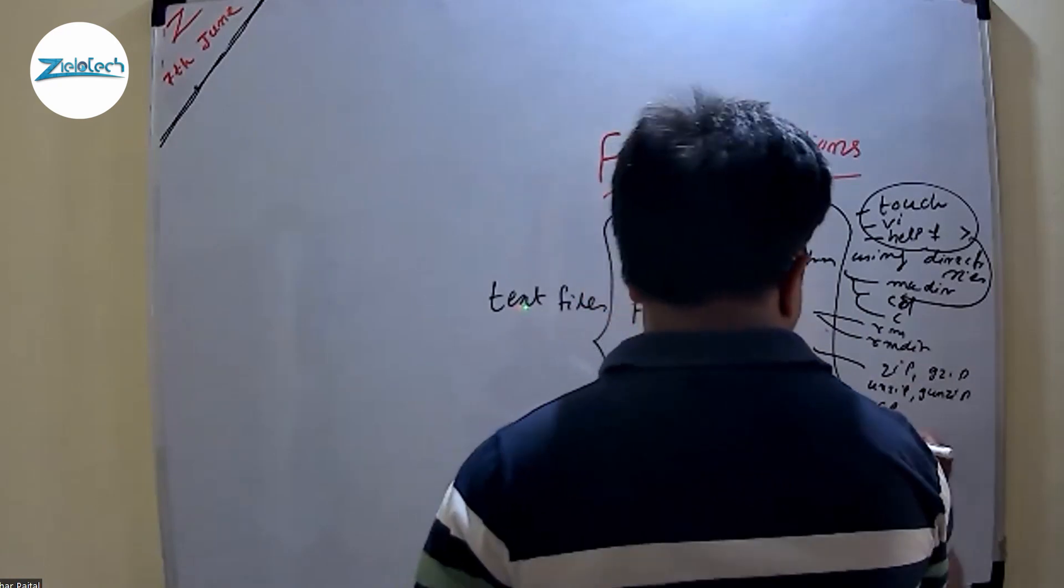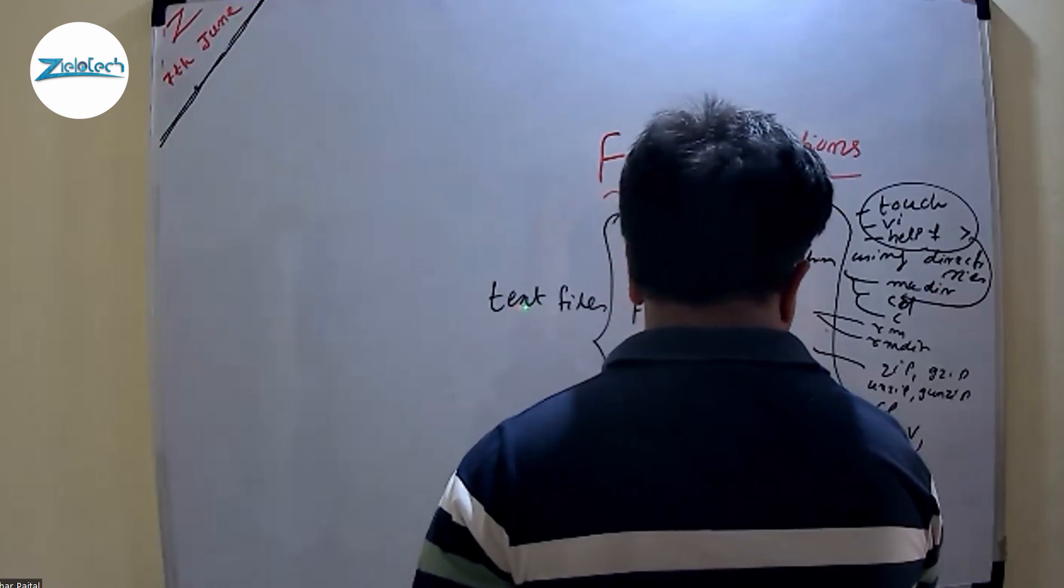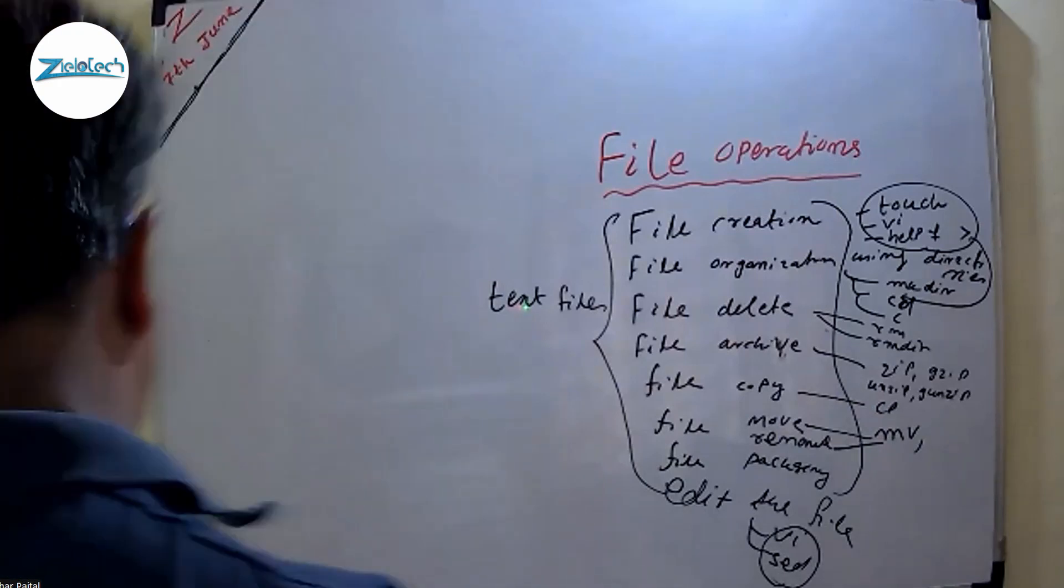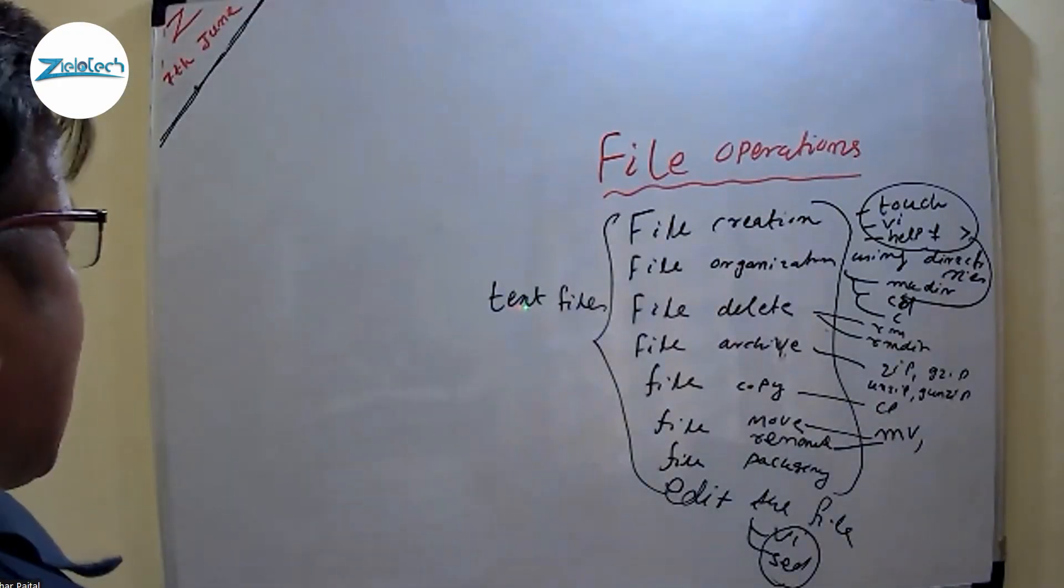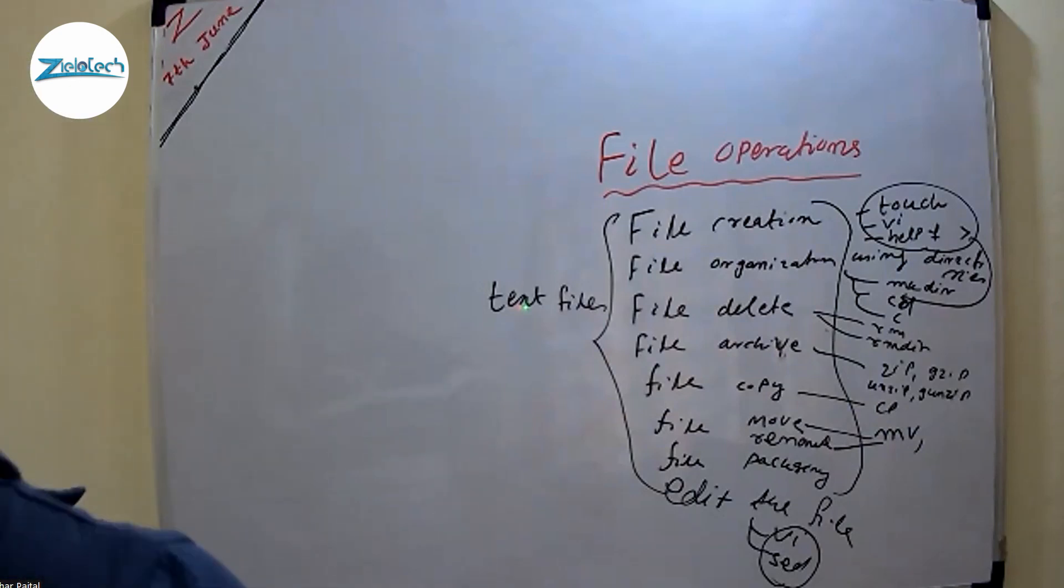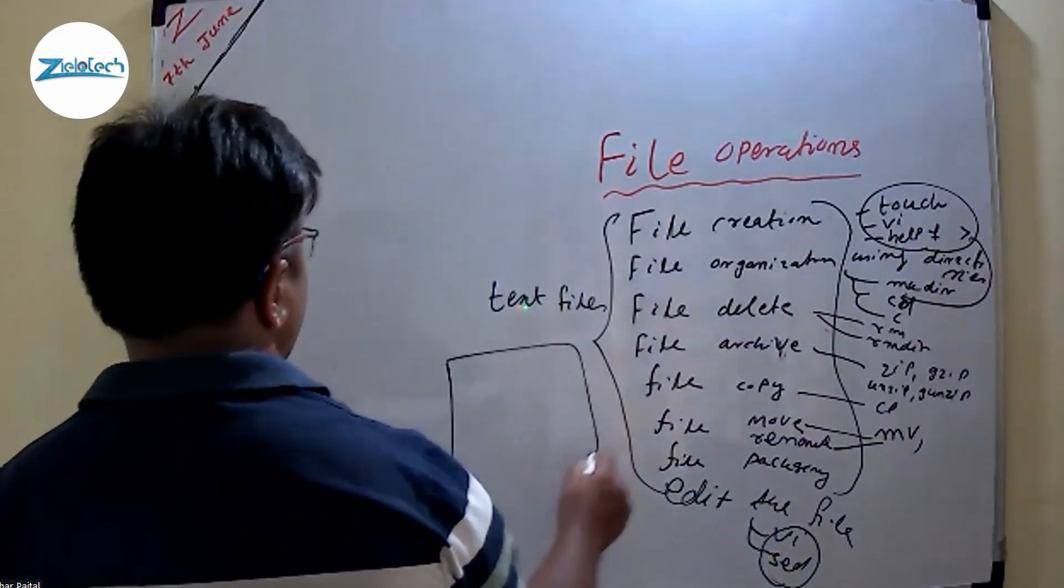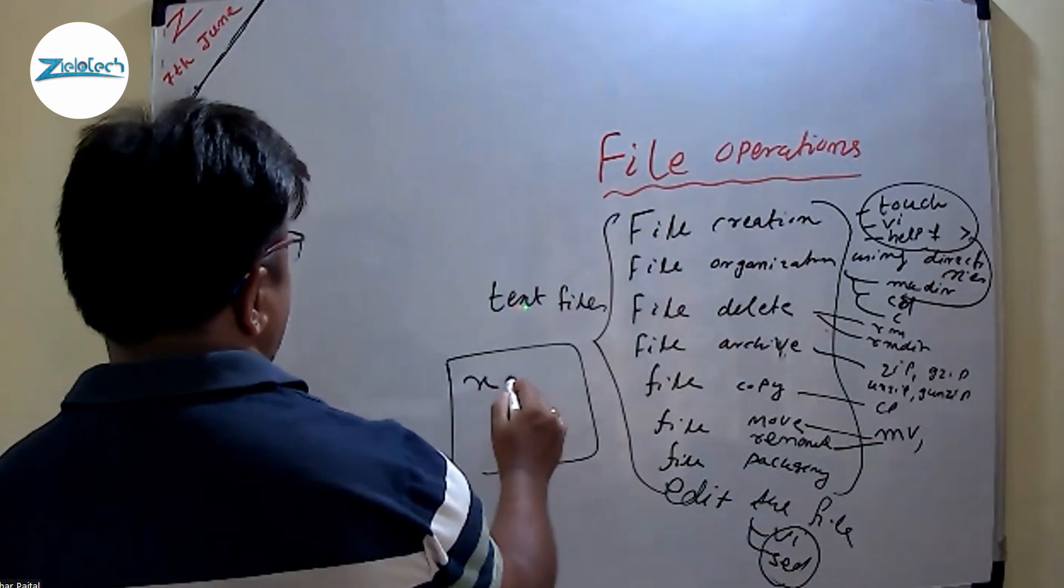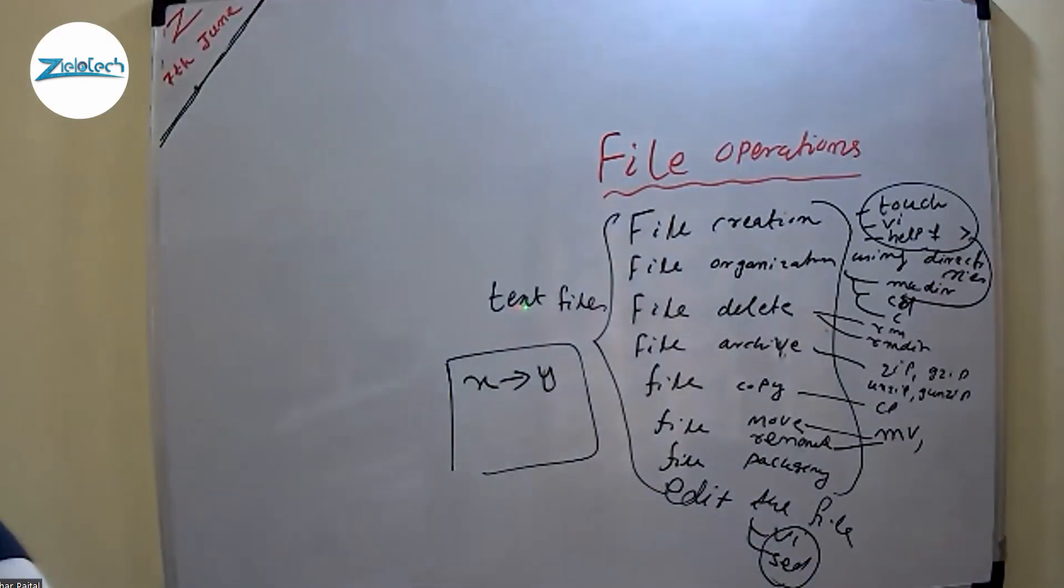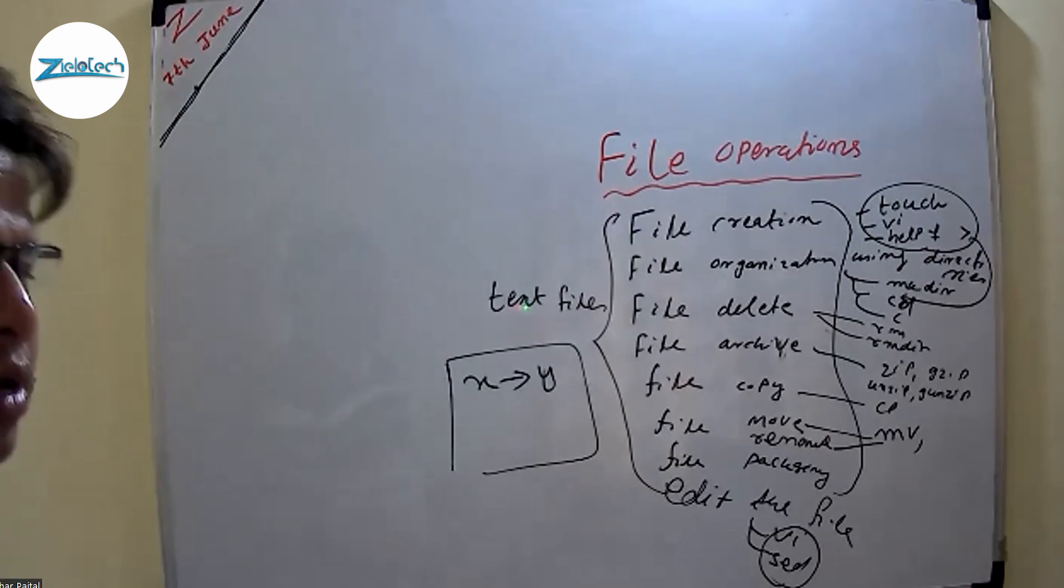Then file move. The command is called mv. mv command is also used for rename. So rename and move. If a file is present in a particular folder and I want to move that file from a folder to another folder, then we are using mv also. Suppose I am in a single folder, here x is there. I just rename, I want to rename it to y, then it is also possible. So within a single folder, we can rename a file. Within multiple folders, we can move the files.